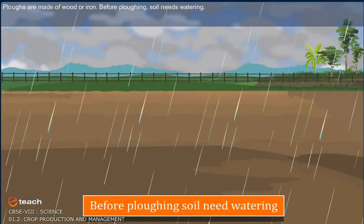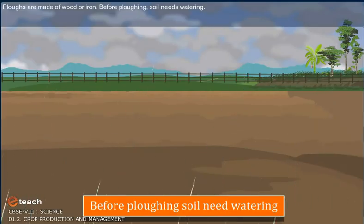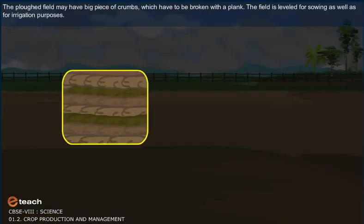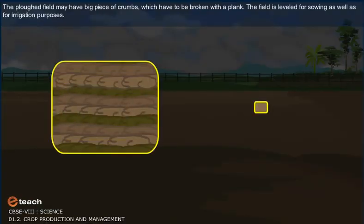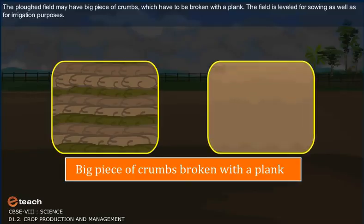Ploughs are made of wood or iron. Before ploughing, soil needs watering. The ploughed field may have big pieces of crumbs which have to be broken with a plank. The field is leveled for sowing as well as for irrigation purposes.